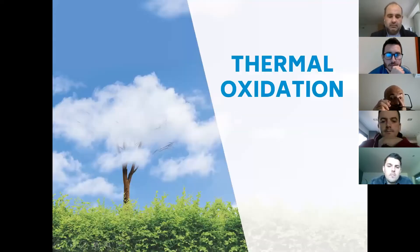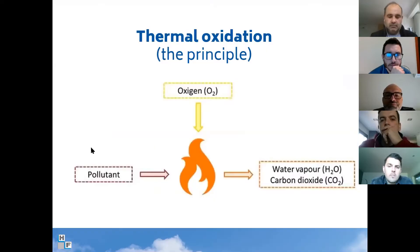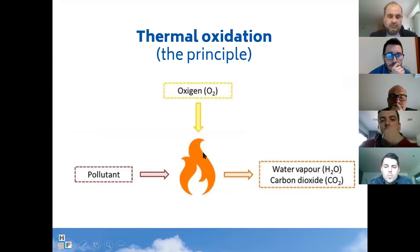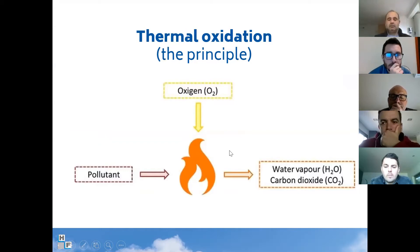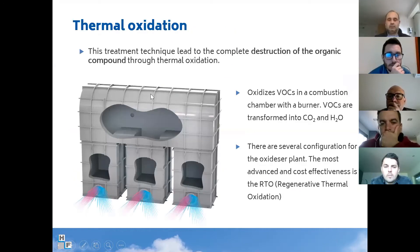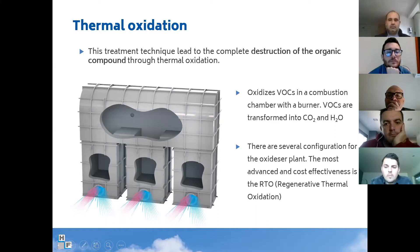Let's start with thermal oxidation. Thermal oxidation involves the oxidation of the pollutant — the VOC — with oxygen and temperature. You have the conversion of your molecule into water and carbon dioxide. Here you can see an example of an oxidizer. Theoretically, you obtain carbon dioxide and water.